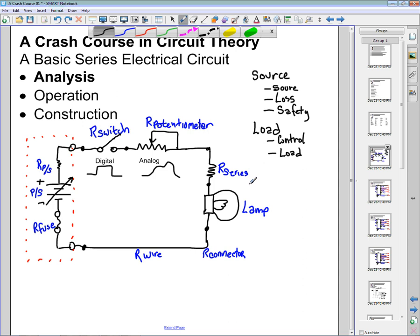So at this point now we have five different things in this circuit. We have a source. We have loss. We have a safety component. We have a control element. In this case the resistor will help control the level of the current. As well as the load itself which utilizes the energy.